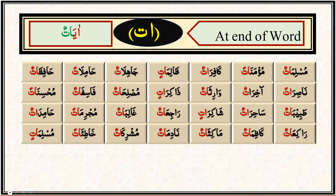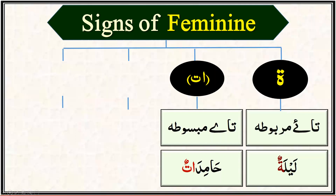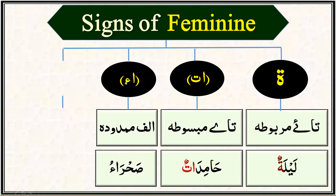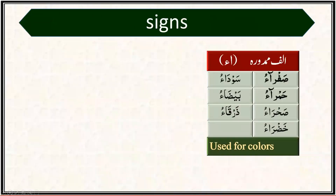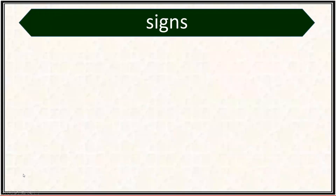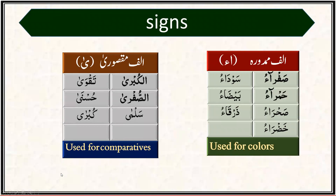The next two signs to identify the feminine gender are: alif mamdooda — alif and hamza at the end of the word — with example sahra; and alif maqsura, with example husna. Further alif mamdooda examples are: safra, sawda, hamra, bayda, sahra, zarqa — all feminine, specifically used for colors. Alif maqsura examples are: al-kubra, taqwa, sufra, husna, salma, kubra — mainly used as comparatives.